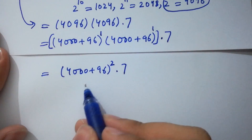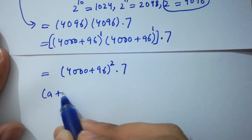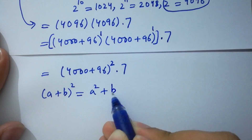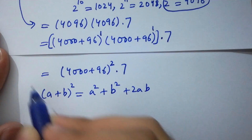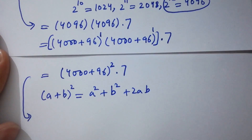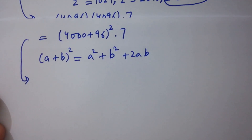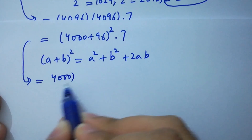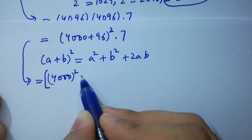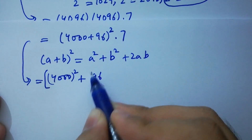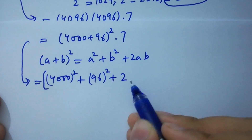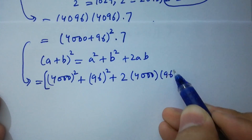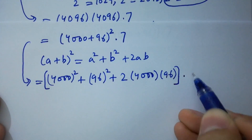In the next step, we apply the formula: A plus B whole square equals A squared plus B squared plus 2AB. We write 4096 as 4000 plus 96. Now apply the formula: we have 4000 squared plus 96 squared plus 2 times 4000 times 96, all times 7.